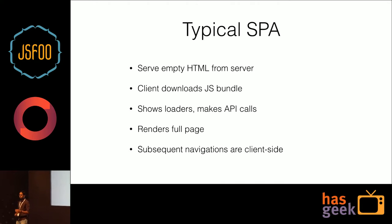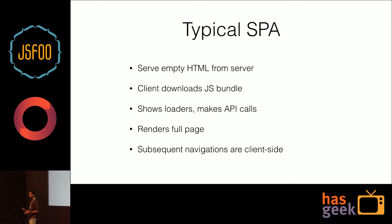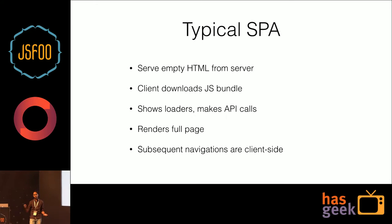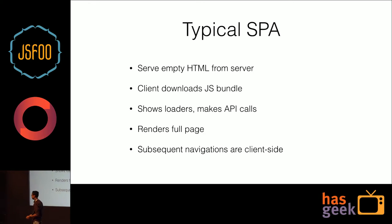This is what a typical single-page app looks like, keeping all those differences in mind. How a typical SPA works is that you serve an empty HTML from the server. The client downloads the JS bundle that's in the HTML, and you show loaders, make API calls, fetch the data, and render it. For subsequent navigations, if you click on a link, you already have the JS as a template, you immediately show the next screen loader, make API calls, and render. That's how SPAs have been working.